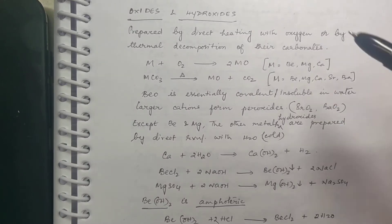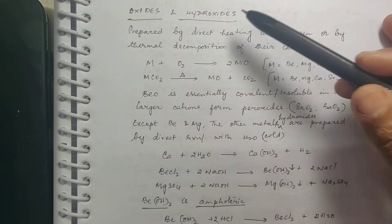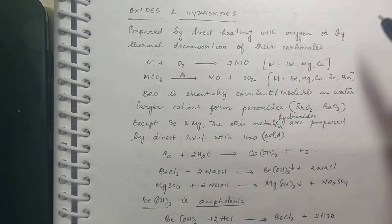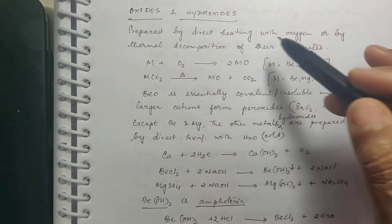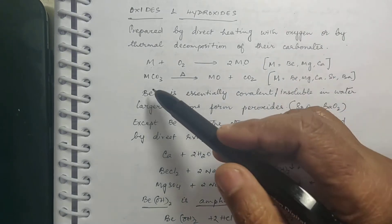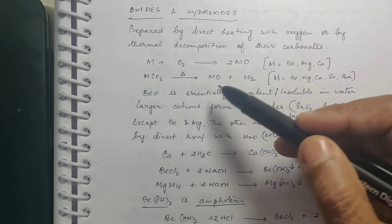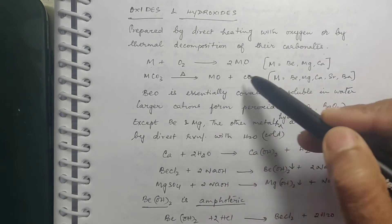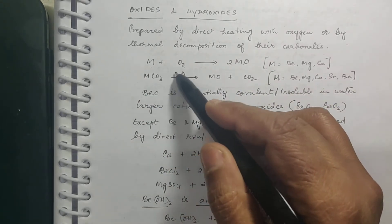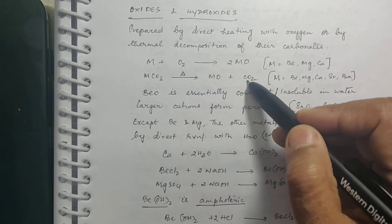Let us move further and see about oxides and hydroxides of second group elements. These oxides and hydroxides are formed by direct heating with oxygen or by thermal decomposition of their carbonates. For example, Mg + O2 gives MgO, and CaCO3 on heating gives CaO + CO2. These two reactions are quite familiar.